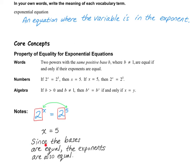Since the bases are equal, that means the exponents are also equal. So our general rule is: if we have b to the power of x equaling b to the power of y, we can say that x is equal to y, because the bases are exactly the same. In this scenario, you have to have b greater than 0, and b cannot equal 1.